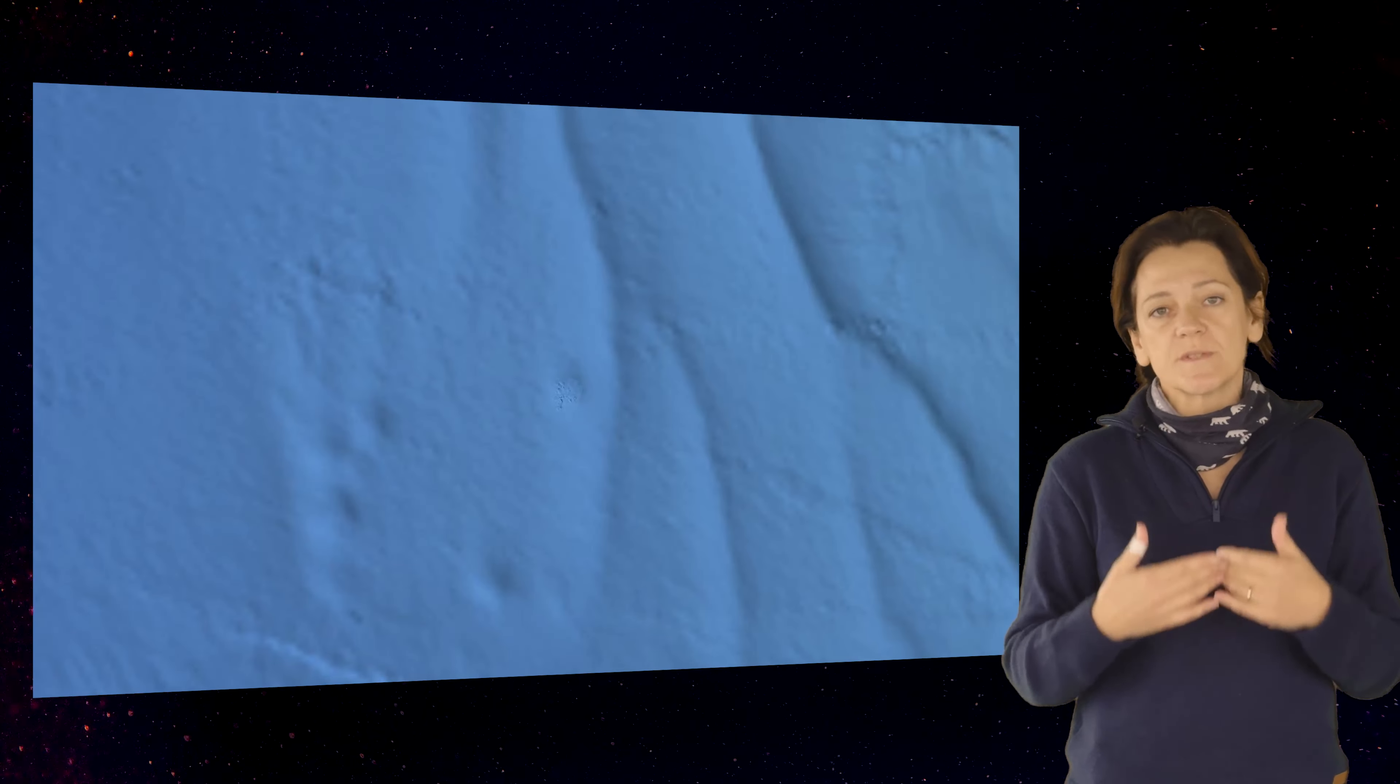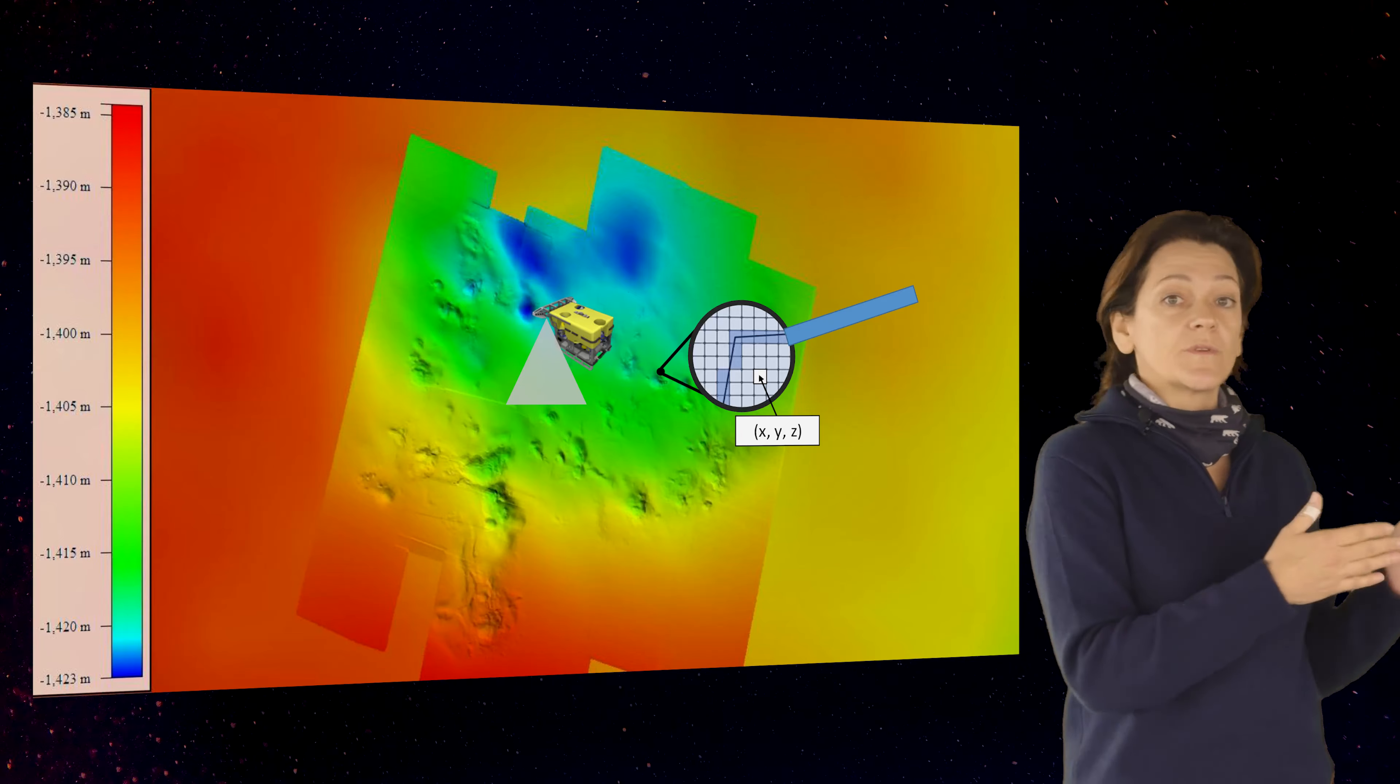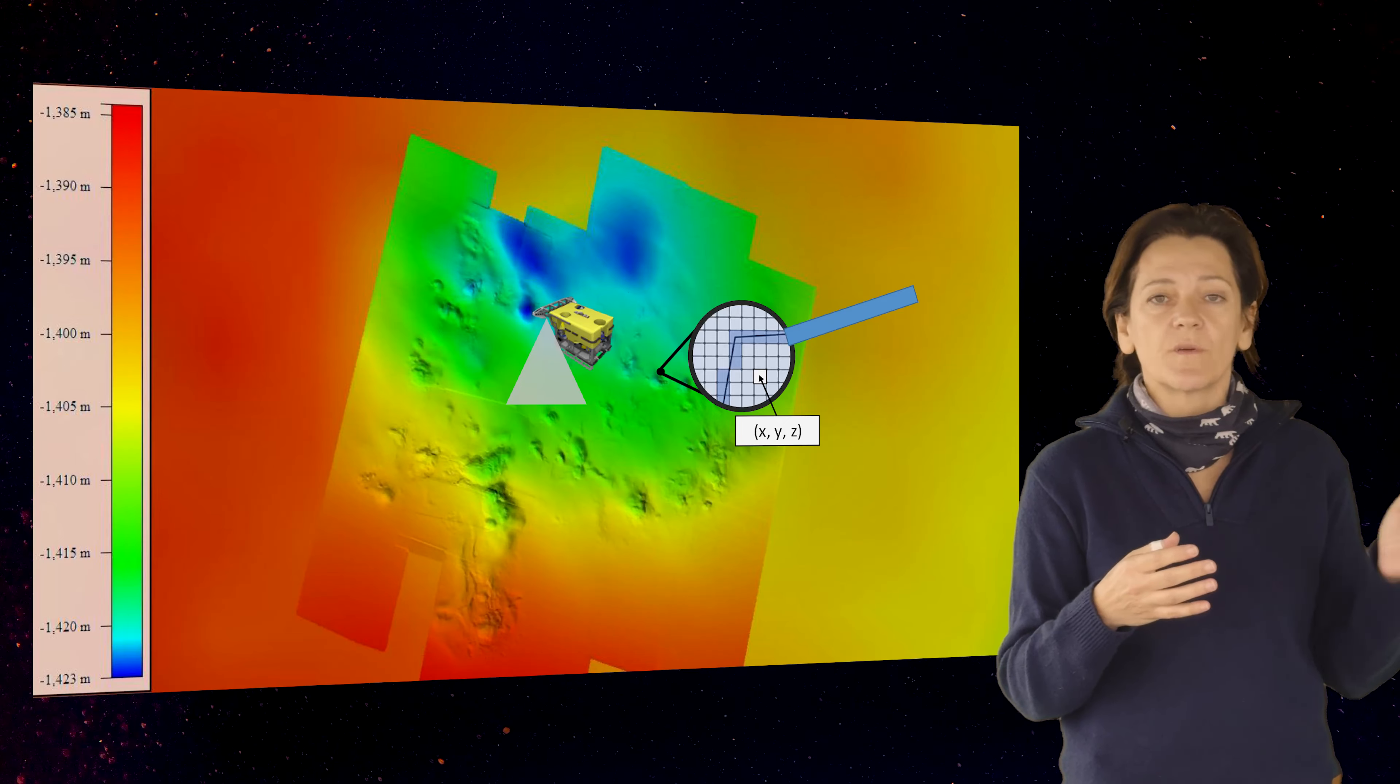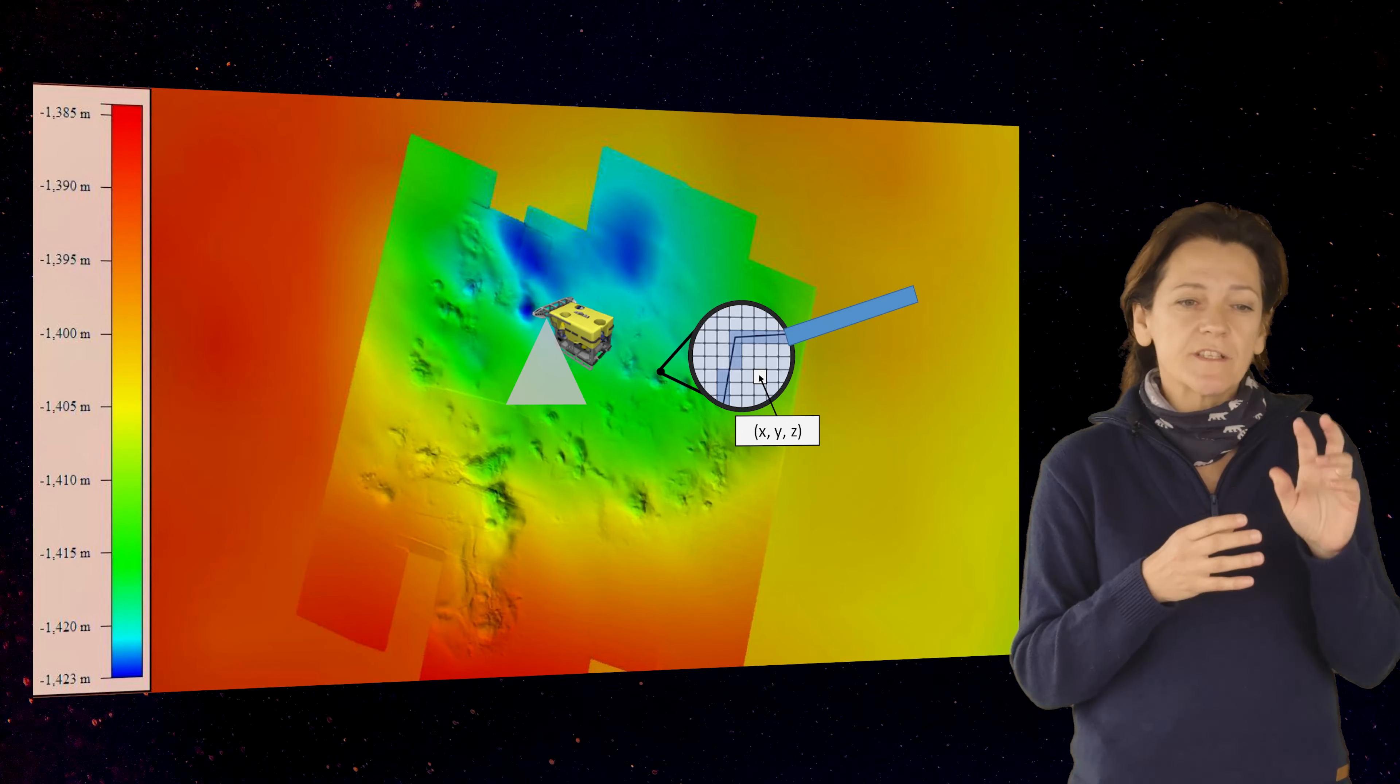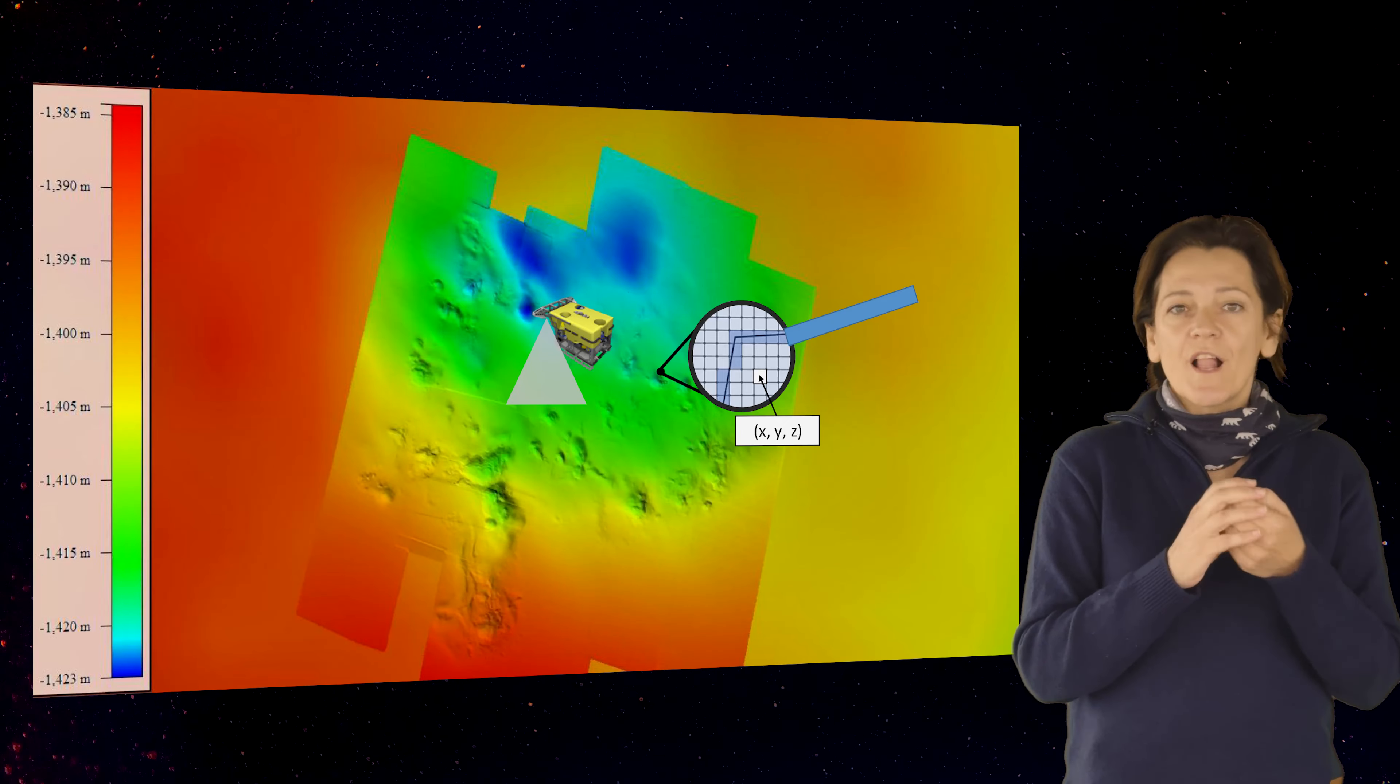Multi-beam echosounders are able to give details such as this one, in which you can see other landforms appear such as sedimentary waves, depressions, and if you look at a certain region you can even see that there are some depressed features on the seafloor. Look at them in detail, we can zoom in and we start to lose again the detail on this map.